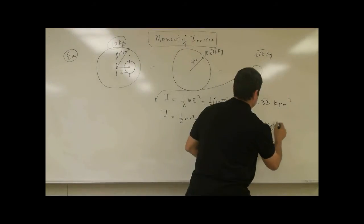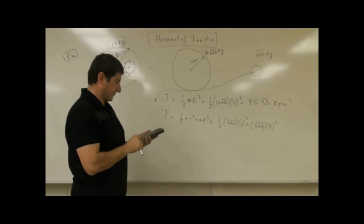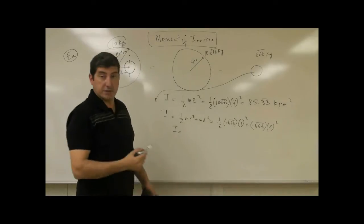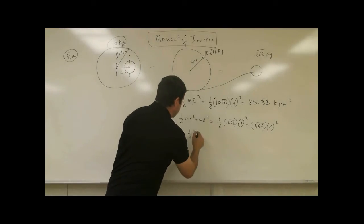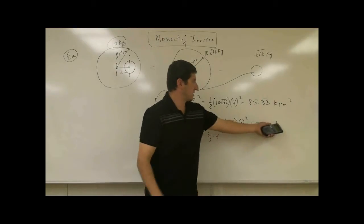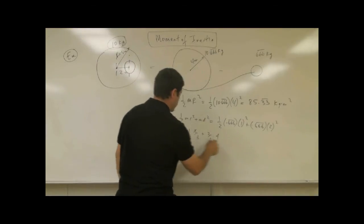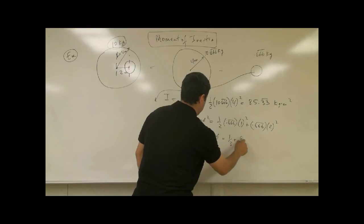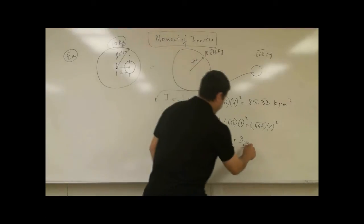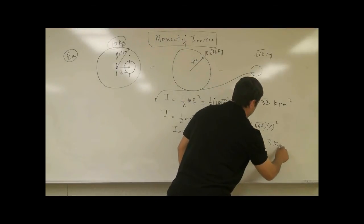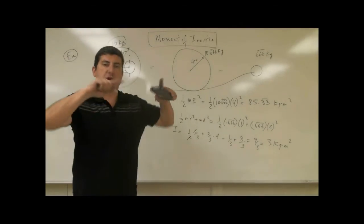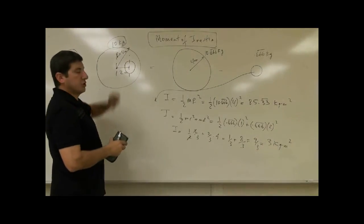Plus its mass times its distance from the center, which is two meters, squared. We can approach this as: one-half times two-thirds plus two-thirds times four, because two squared is four. This and this cancels, you have one-third plus eight-thirds, which gives you nine-thirds, which is three.